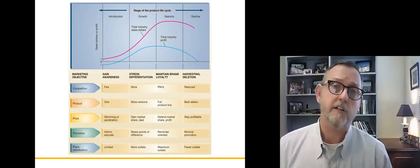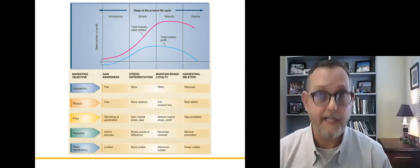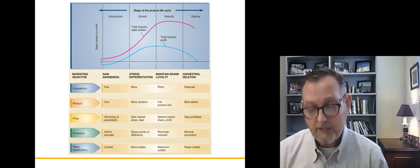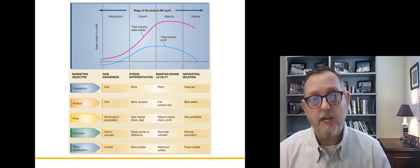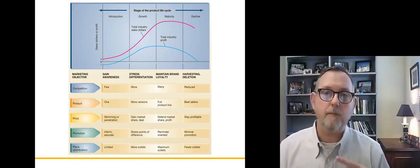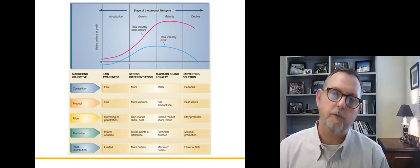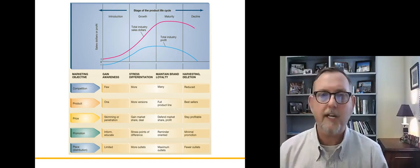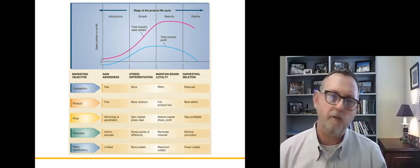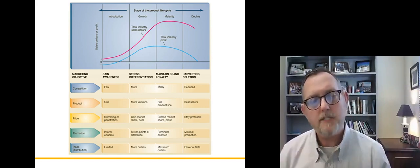Another way we think about the product life cycle is that when we do the marketing mix, when we think about our four P's and the strategy we're going to use to implement our four P's, it changes over time. And a lot of times we can note that change based on the stage of the product life cycle.